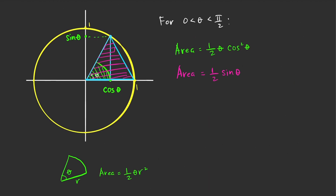Lastly, we consider the sector with radius equal to one and central angle theta. It is clear that this larger sector is greater than the triangle region. The area of that larger sector is equal to one-half times theta times its radius squared, and since the radius is one, the area is simply one-half theta.